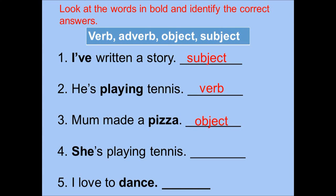Number four: She's playing tennis. The bold word is she. What is she in the sentence? The correct answer is subject. Number five: I love to dance. The bold word is dance. What is dance in the sentence? The correct answer is verb.